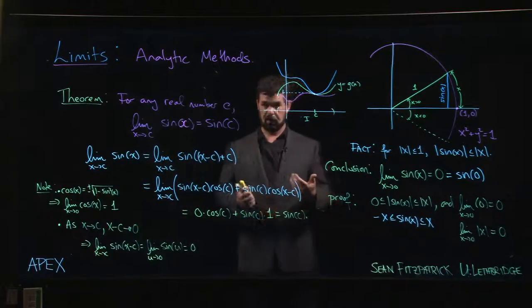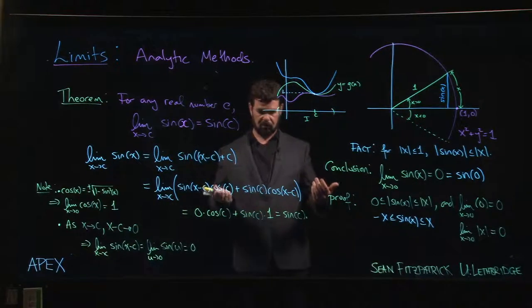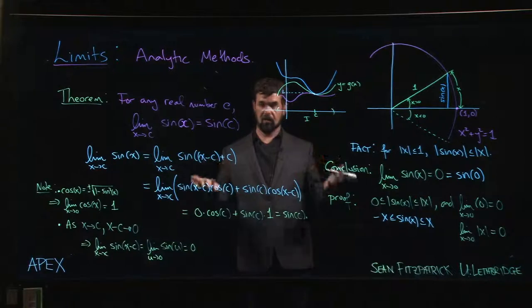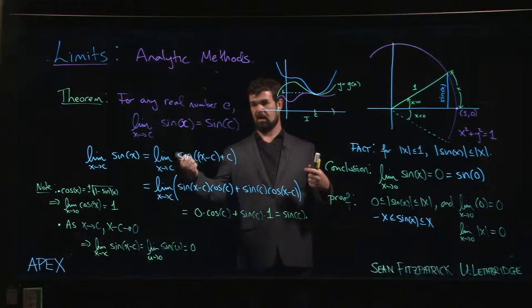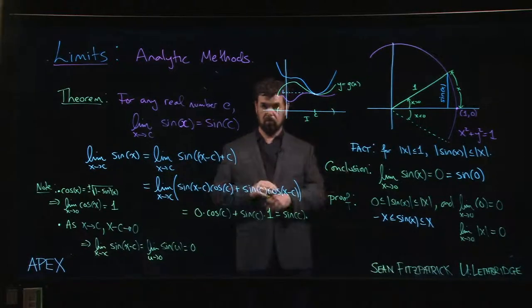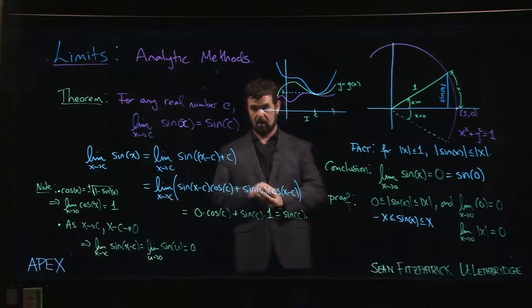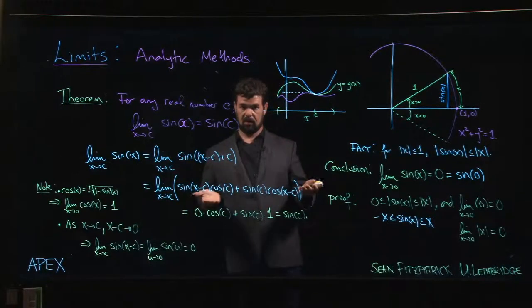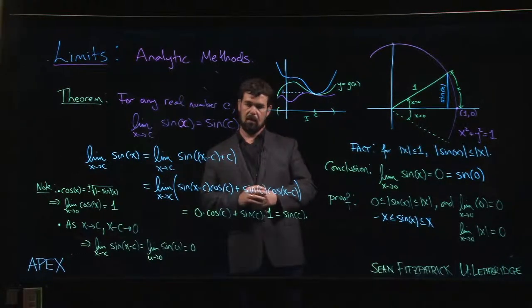So sine and cosine, those limits can be done by direct substitution. And once you know that, we know that tan is sine over cos. So limits involving tan can be done by direct substitution as long as the denominator is not 0.